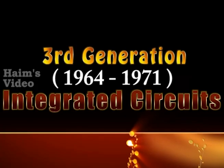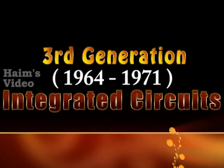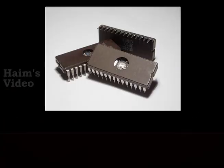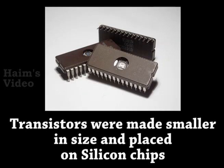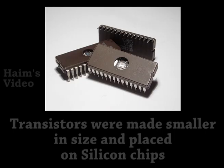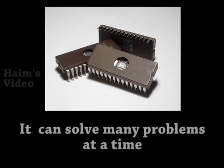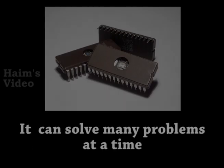3rd Generation: From 1964 to 1971 — Integrated Circuits. Transistors were made smaller in size and placed on silicon chips. This increased the speed and efficiency of computers, and they could solve many problems at a time.